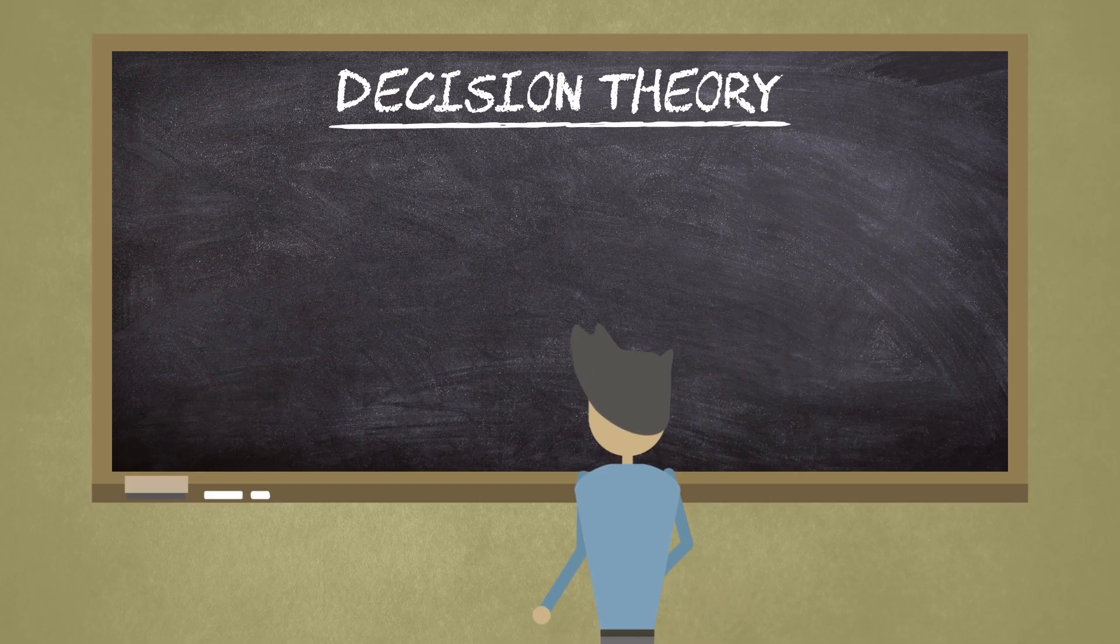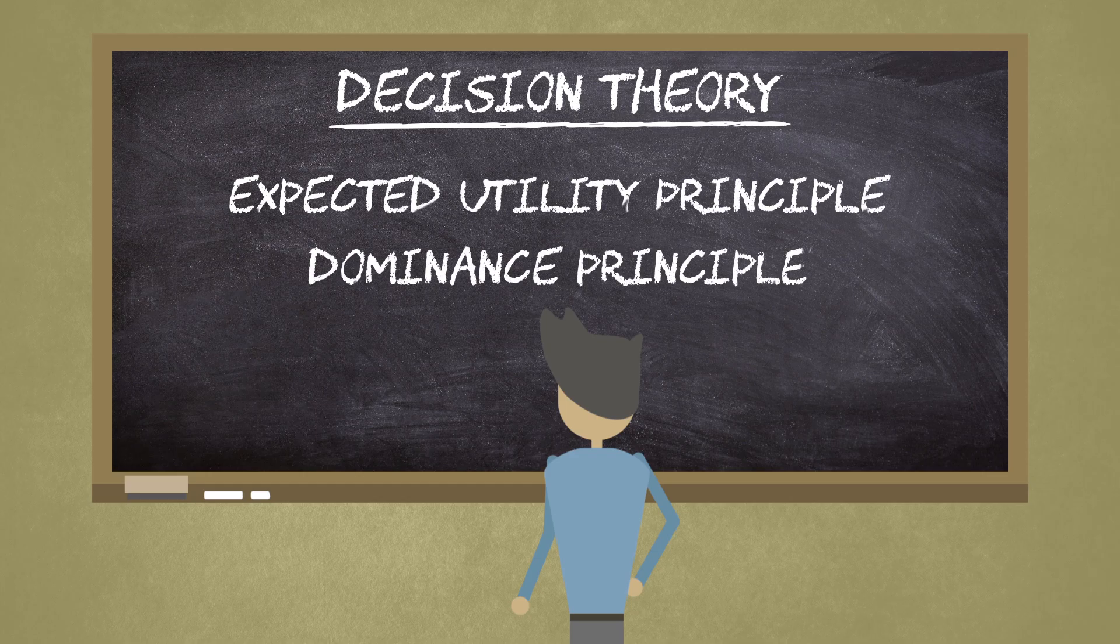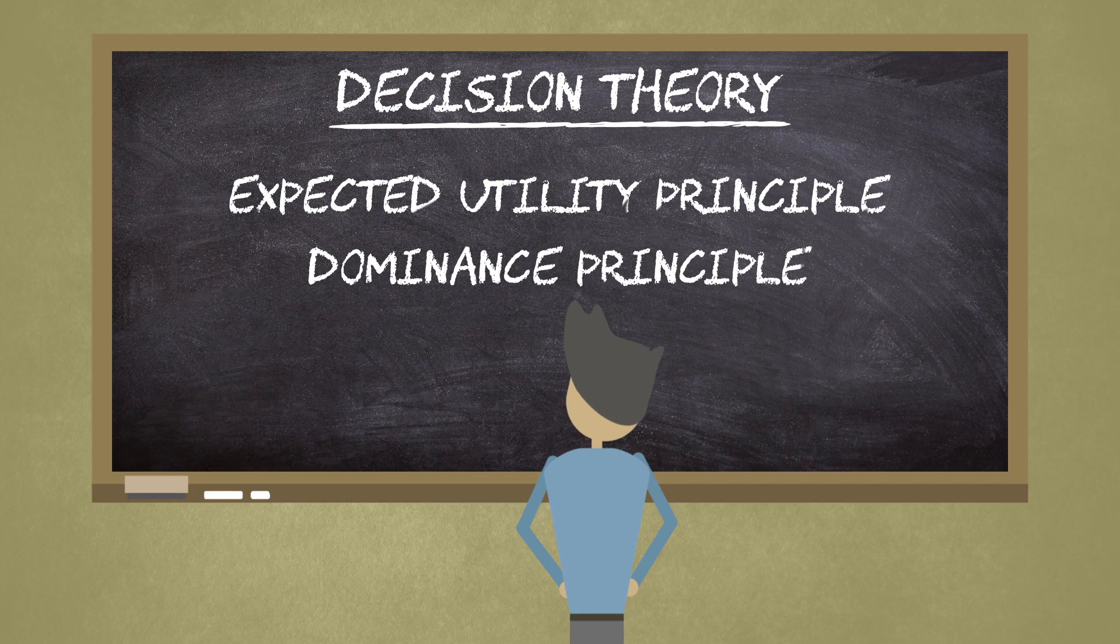At the heart of Newcomb's paradox is a conflict between two principles of decision theory: the expected utility principle and the dominance principle. But before we look at these, let's look at the standard arguments for being a one-boxer or a two-boxer.